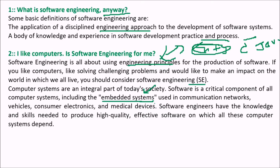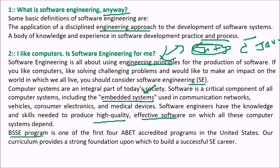Software's role in embedded systems is especially prominent today. Embedded systems are used in communication networks, vehicles, consumer electronics, and medical devices. Software engineers have the knowledge and skill needed to provide high-quality, cost-effective software on which all these computer systems depend. Some software is truly vital — it may guide a nuclear plant or be embedded in a rocket. The Bachelor of Science in Software Engineering (BSSE) is one of the first ABET-accredited programs in the United States, providing a strong foundation for a software career.